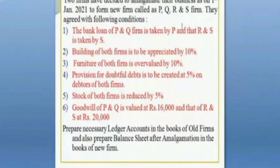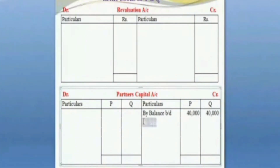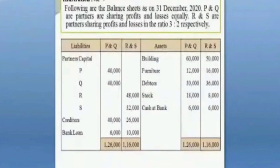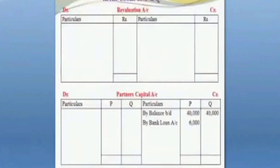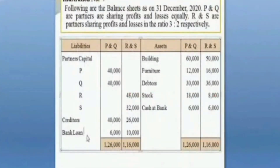The bank loan of P&Q firm is taken by P, and that of R&S is taken by S. This is adjustment number one regarding the bank loan account.